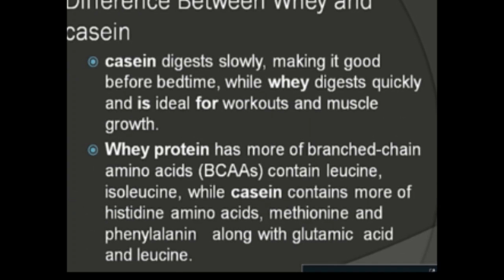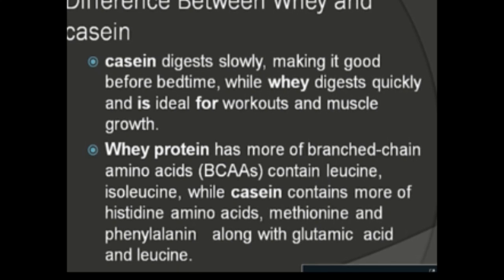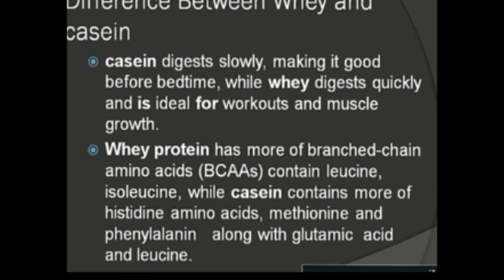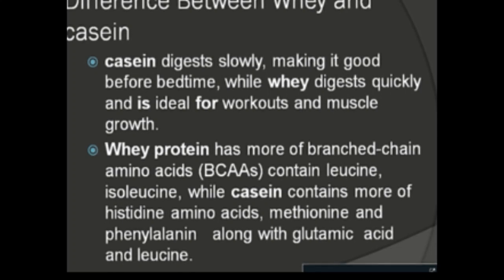The difference between whey protein and casein protein is that casein digests slowly, making it very good for bedtime, while whey protein is quickly digestible and is ideal for workouts and post-exercise muscle growth. Whey protein is rich in leucine and isoleucine, while casein, besides leucine and isoleucine, also contains other amino acids like glutamic acid, methionine, and histidine.